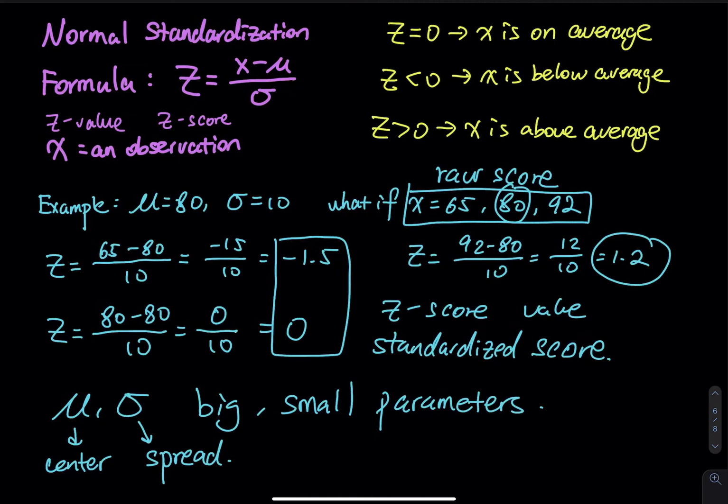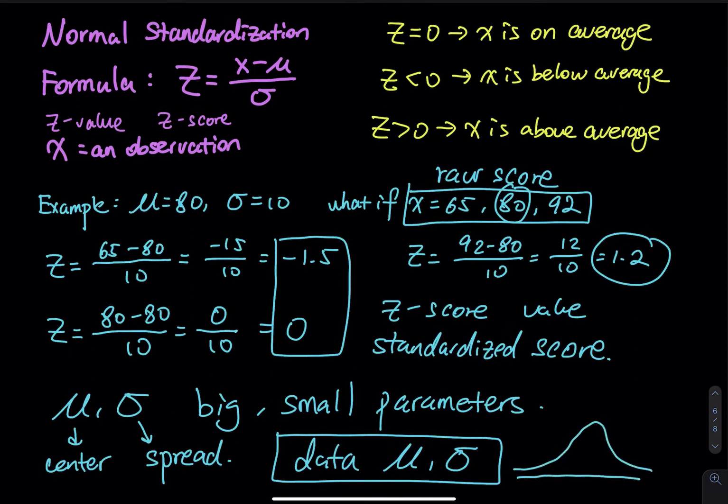Since the center and the spread changes all the time, then we can say that the number of normal distributions is unlimited. So every time you have data, you have a mu and then you have a sigma. So this is one set of stuff. You have a set of data, you have a mu, you have a sigma, then you can use the mu and the sigma to build a normal curve.